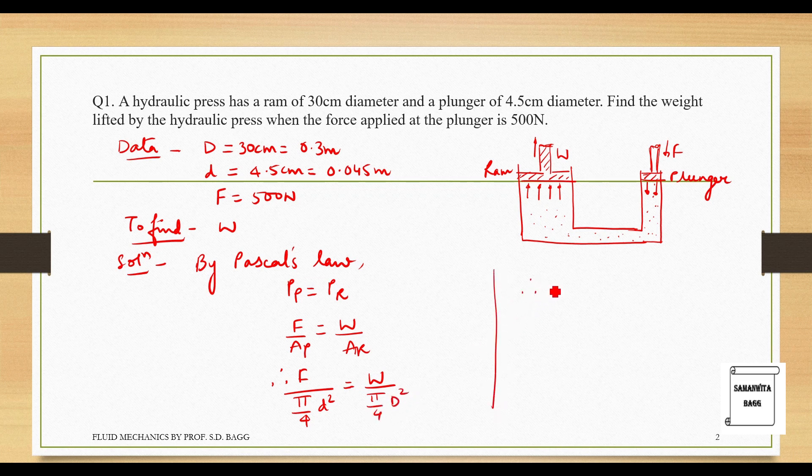So, therefore, force is 500, this is π by 4 into 0.045 square is equal to unknown W upon π by 4 into 0.3 square. So, when you solve this, you will get the value of W as 22.22 kN.